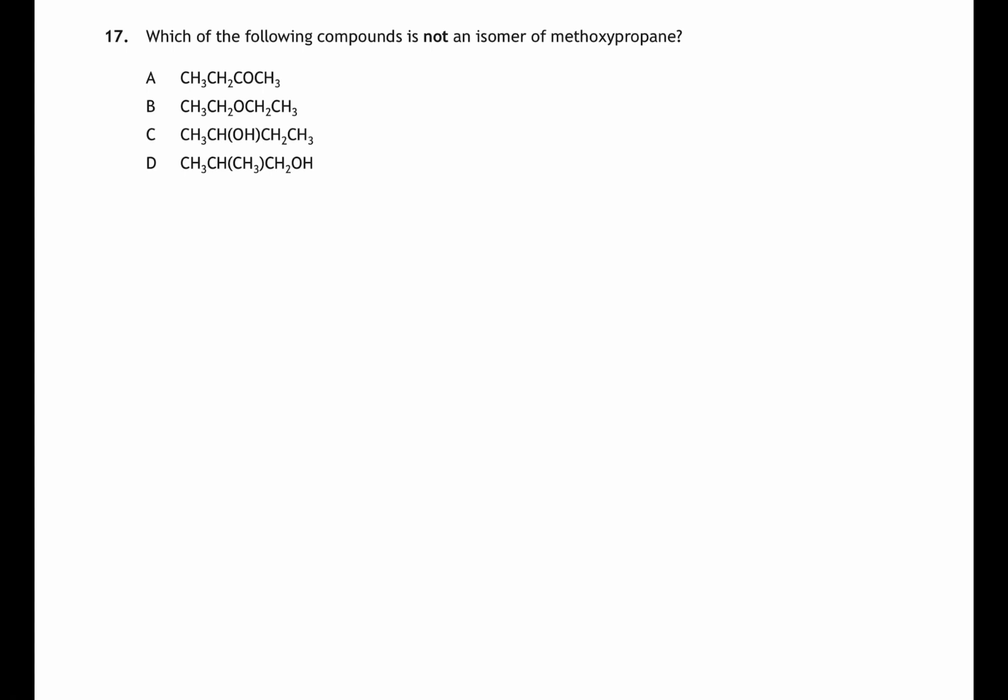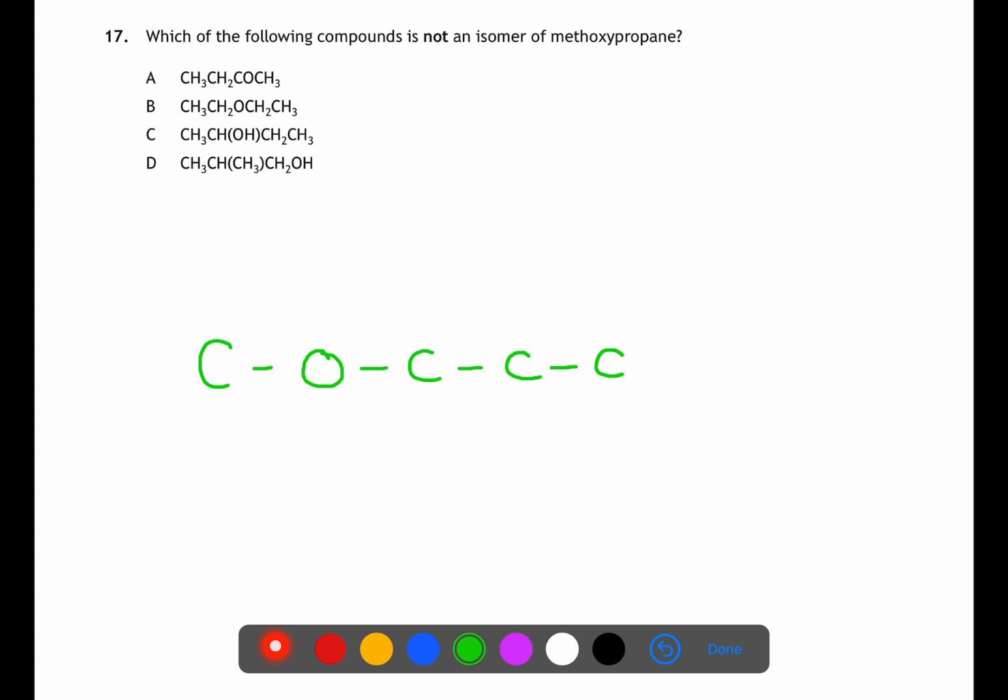In question 17 we're looking for something which is not an isomer of methoxypropane. Methoxypropane has the formula C4H10O. The isomers of methoxypropane will either be other ethers or alcohols. A has the formula C4H8O and is therefore not an isomer of methoxypropane. B is another ether isomer and C and D are alcohol isomers of methoxypropane.